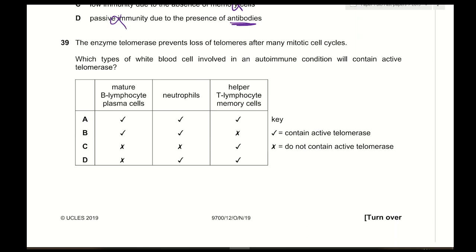Question 39: Telomerase prevents loss of telomeres after many mitotic cycles. Cells with active telomerase are those that divide rapidly. In autoimmune conditions, memory cells are produced for self-antigens. Mature B lymphocyte plasma cells do not divide — incorrect. Neutrophils do not have a high rate of telomere activity — incorrect. Helper T lymphocyte memory cells keep dividing to produce plasma cells and more T lymphocytes — correct. The answer is C.